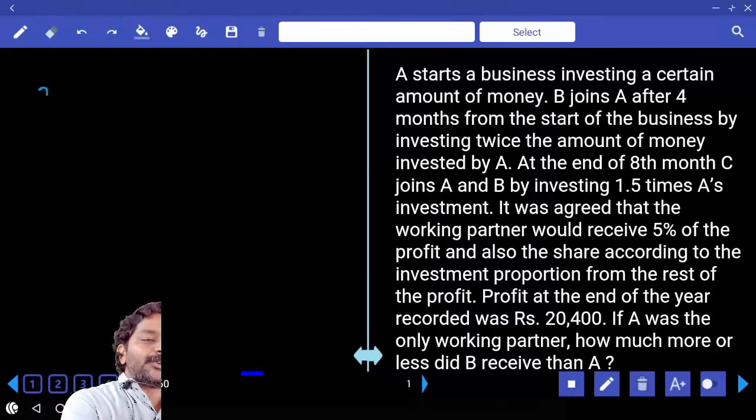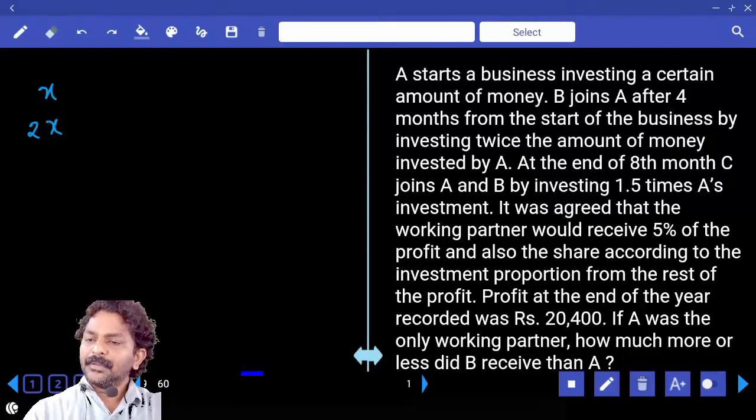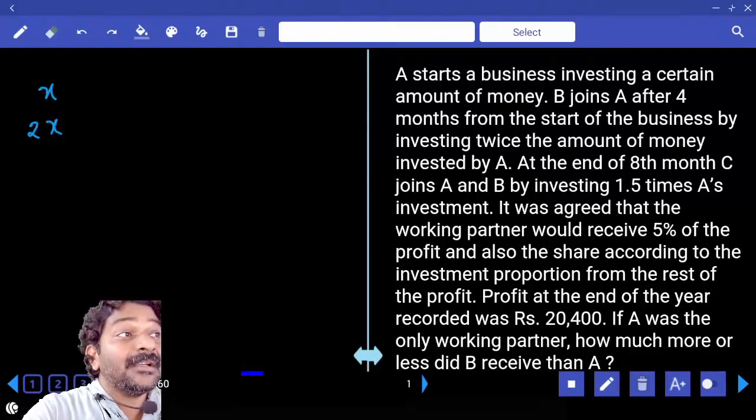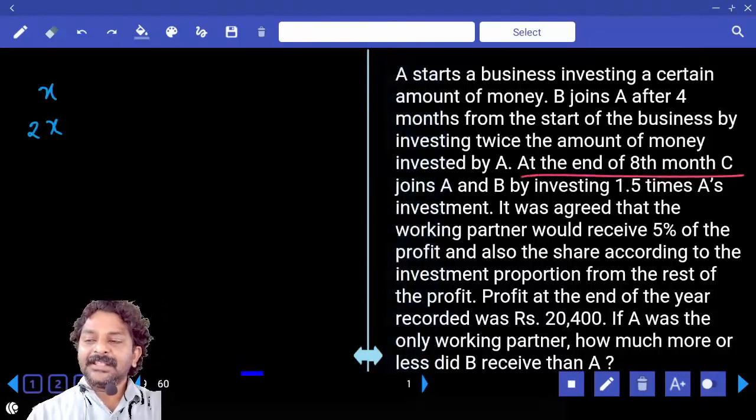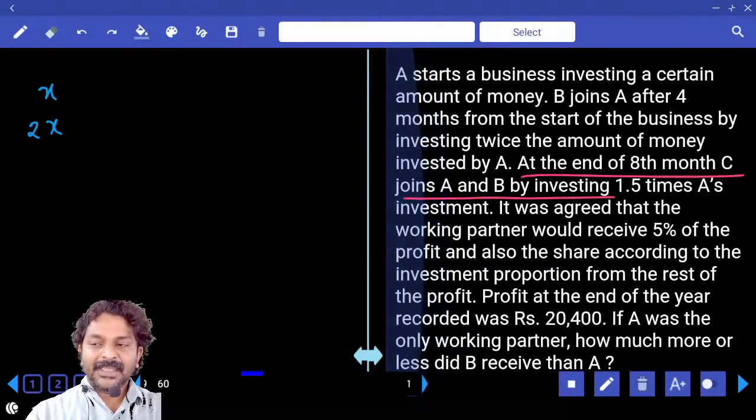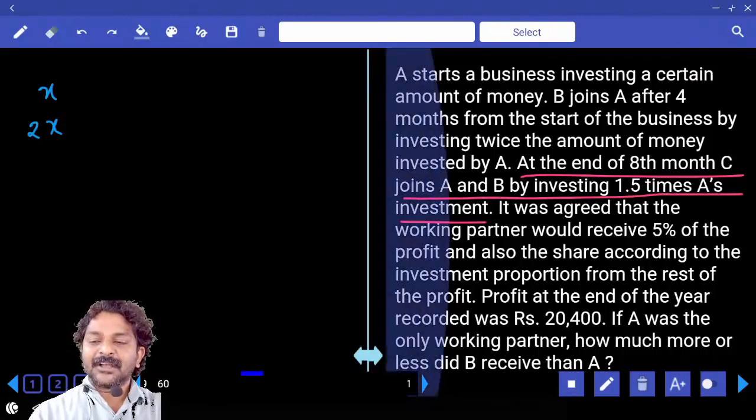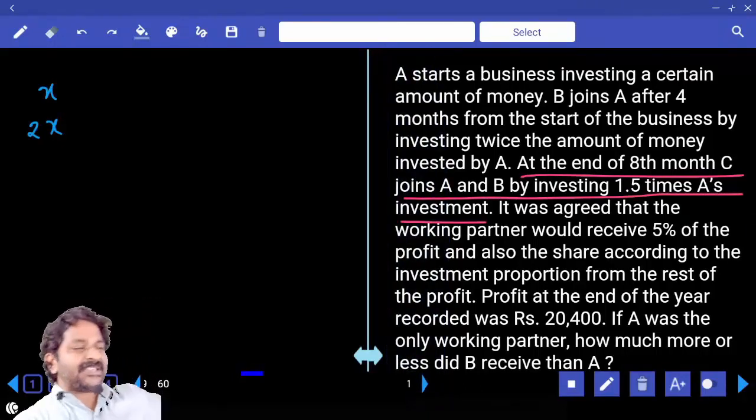If A invests X rupees, B will invest 2X. And when did B join? After 4 months. At the end of 8th month, C joins A and B by investing 1.5 times of A's investment. How much is A's investment?